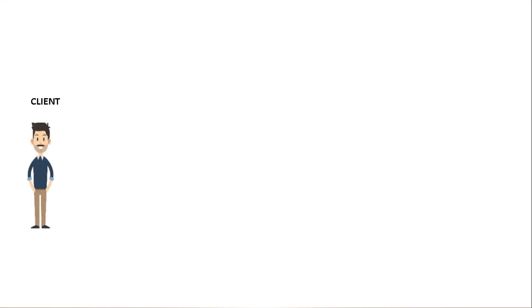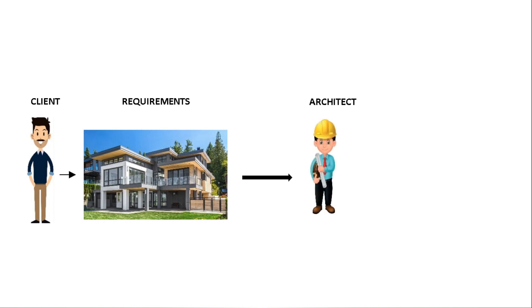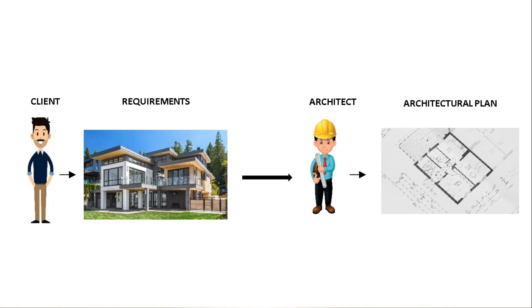Let's take an example: there is a client who wants to build a house. He will have certain requirements and expectations in mind, so he will approach an architect who will create an architectural plan including all his expectations and requirements. Once it is done, the architect and the client can finalize the drawing and structural designing can begin.